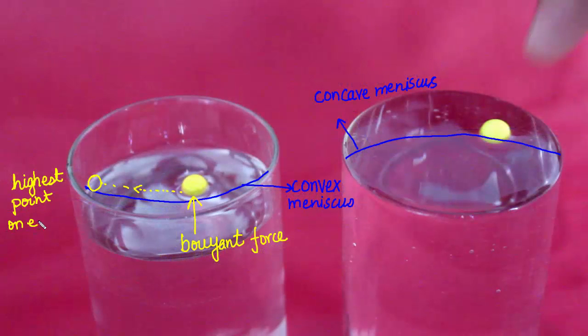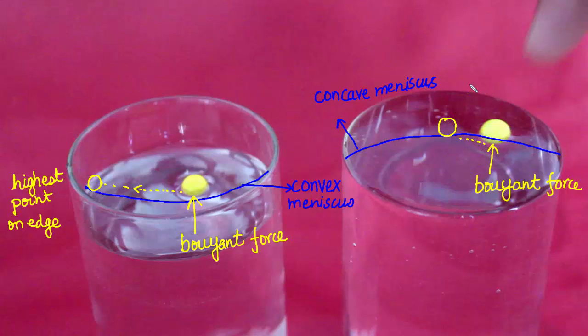And therefore, in a half filled glass, the balls move towards the edge. In case of a completely filled glass, the water surface is convex with the highest point in the middle and therefore, all the balls end up at the center.